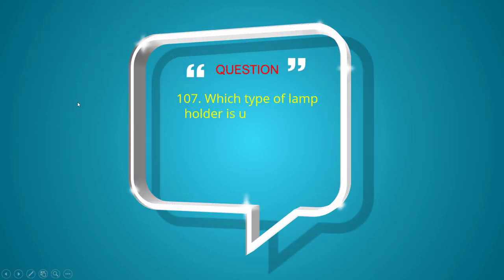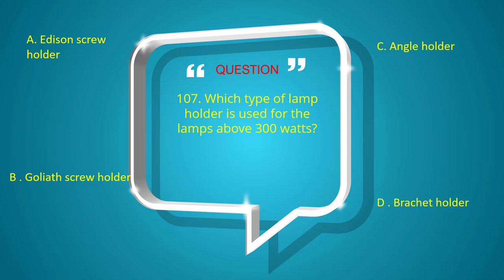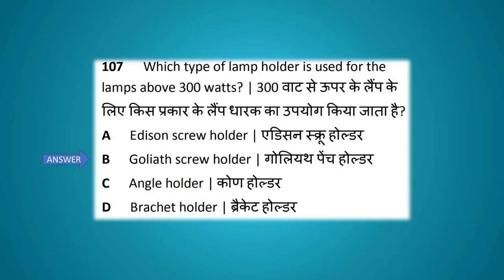Which type of lamp holder is used for lamps above 300 watts? Options: addition screw holder, goliath screw holder, angle holder, bracket holder. The answer is goliath screw holder.